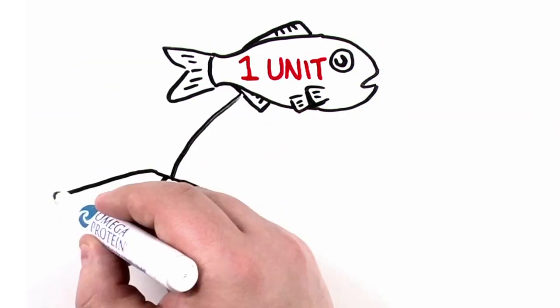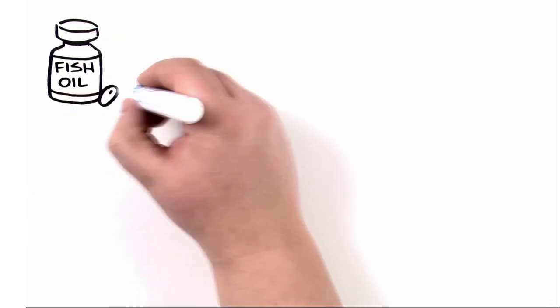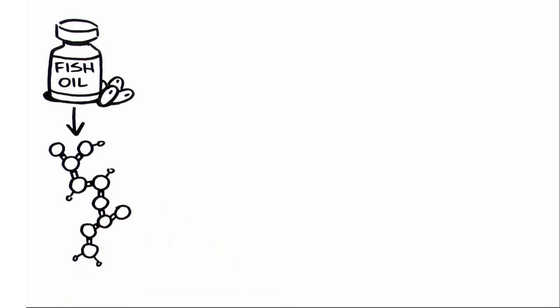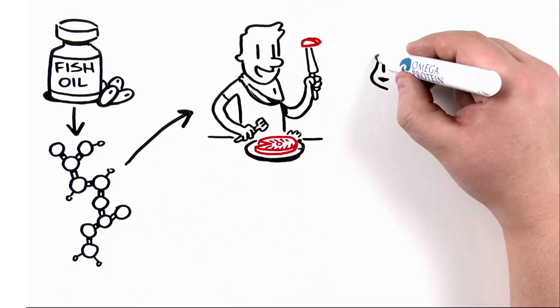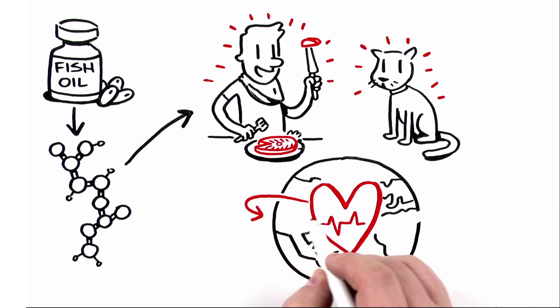Fish oil is the most common and practical source of long-chain omega-3s and is a necessary part of aquaculture. Ultimately, these essential nutrients nourish humans and their pets. They are healthy products for a healthy world.